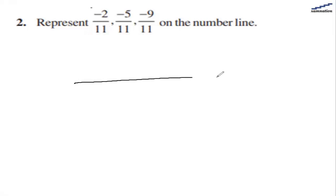So let's draw the number line. All these are negative numbers, and we can see that all of these numbers are between 0 and minus 1.